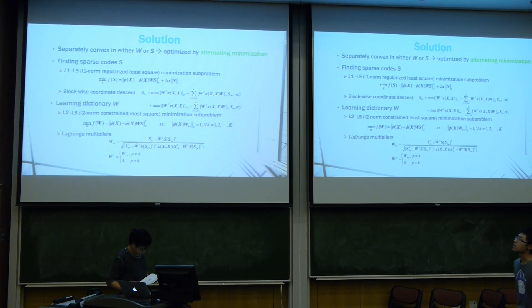To solve this optimization problem, we notice that this is separable convex minimization over W and S, so we use alternating minimization to solve it to decouple two sub-problems. The first is finding sparse code. This is an L1 norm regularized least squares minimization. By using block-wise coordinate descent, we get the update rule for the row vector of S and column vector of W.